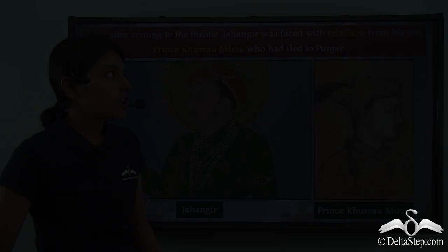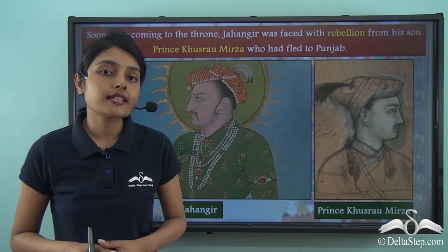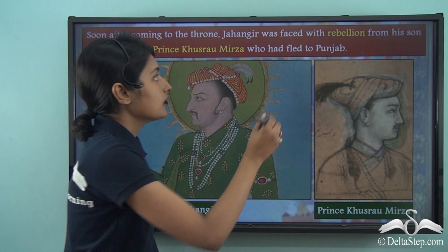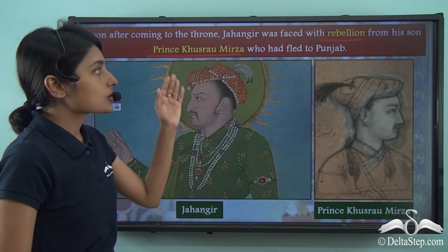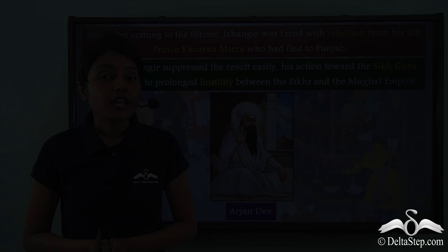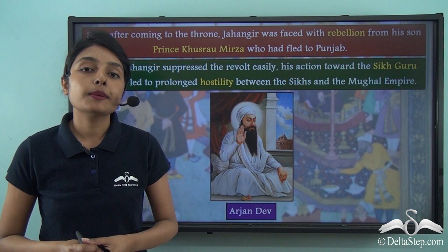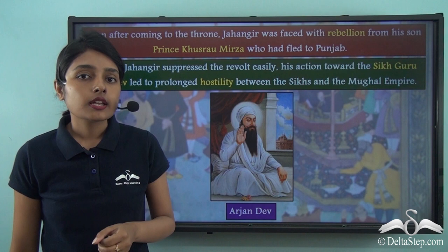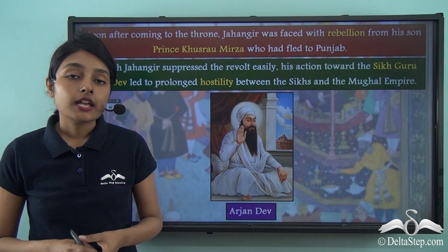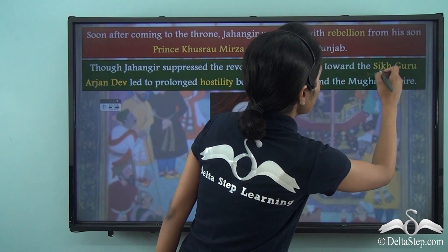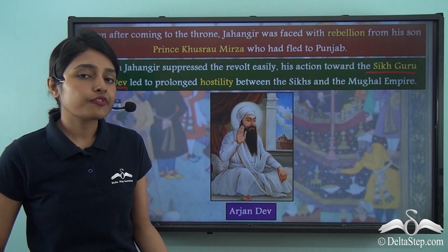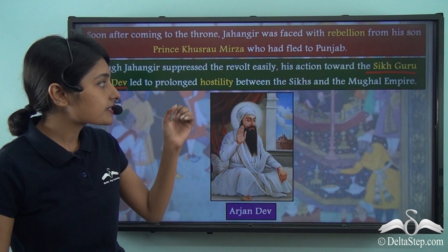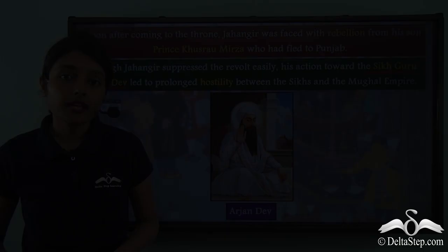It is the rule of Jahangir that we will be discussing in this lesson. Soon after coming to power in 1605, Jahangir was faced with rebellion from his son Prince Khusra Mirza. Khusra Mirza had fled to Punjab, where he got help from the Sikhs. Though it was easy for Jahangir to suppress the revolt, Jahangir had butchered the fifth Sikh Guru Arjan Dev, which caused hostility between the Sikhs and the Mughal Empire.